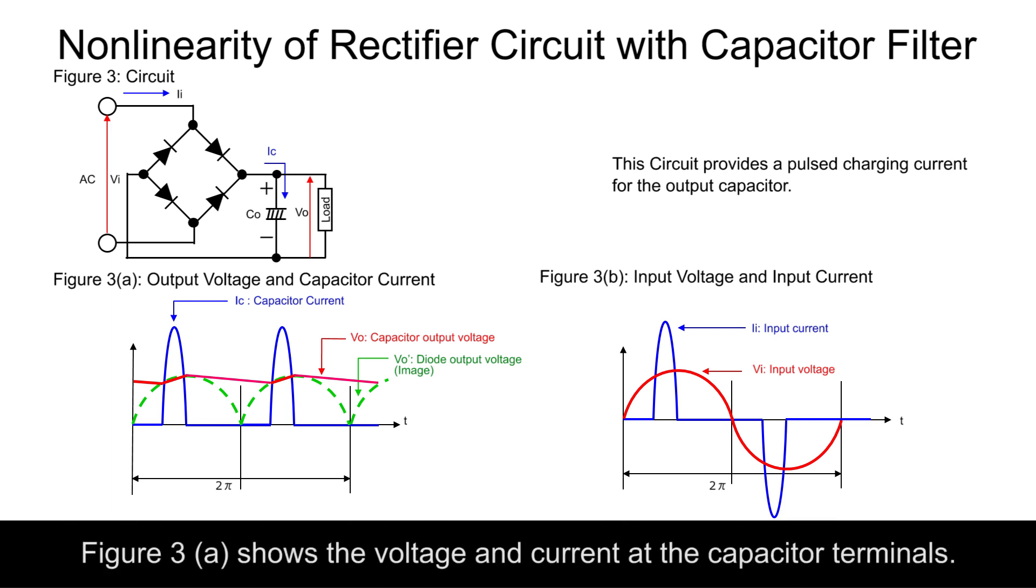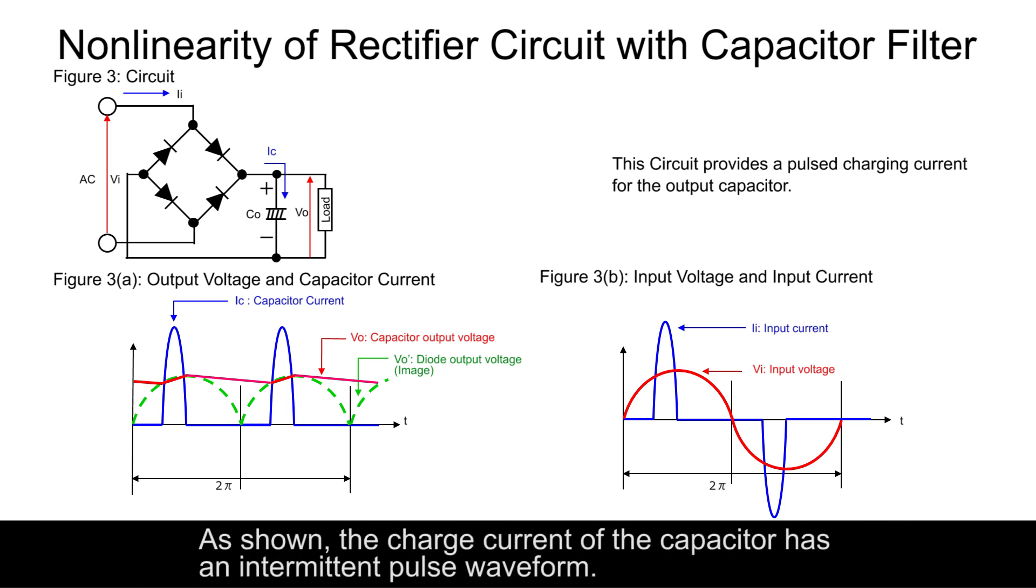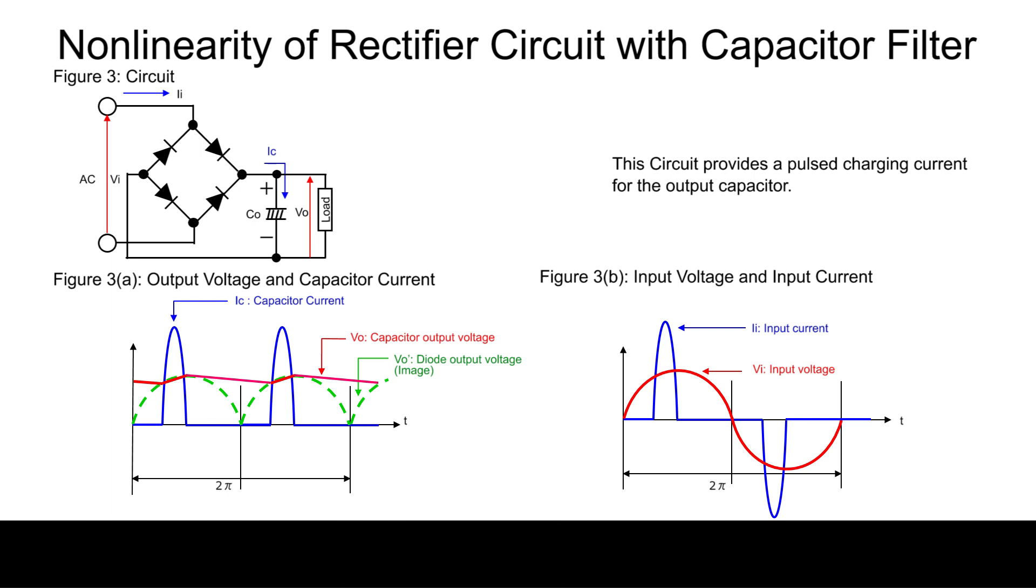Figure 3 shows the voltage and current at the capacitor terminals. The capacitor is charged only when the AC voltage rectified by the diodes is higher than the voltage between the terminals of the capacitor. As shown, the charge current of the capacitor has an intermittent pulse waveform. This is not a sinusoidal wave, and there is also a phase difference.